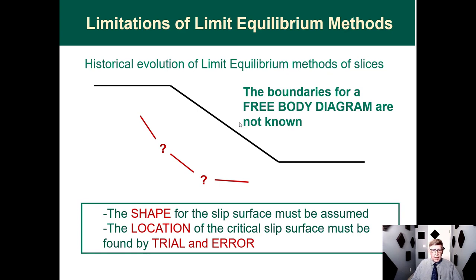Here is our starting problem: we do not have a free body diagram. We have a ground surface and stratigraphy, but we do not know the shape or the location of the sliding surface. We have to assume a shape and then try to find its location through a trial and error process.